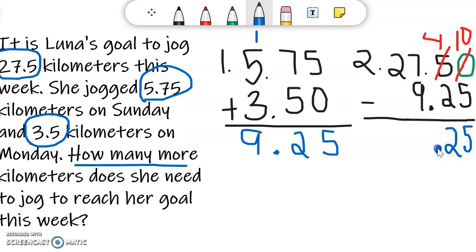Now I'm in the ones place. 7 cannot subtract 9, so I'm going to regroup and borrow 10 from the tens place. Change that 2 to a 1. 10 plus 7 is 17. So 17 subtract 9 is 8 because 8 plus 9 is 17. And then 1 subtract 0 is 1. So now I know that Luna needs to jog an additional 18 and 25 hundredths kilometers to reach her goal. So I'm going to write it out as a sentence.